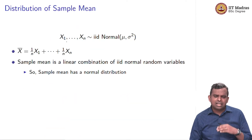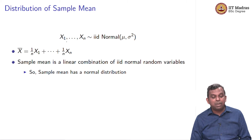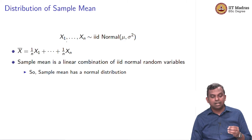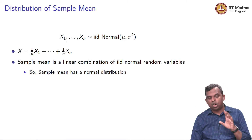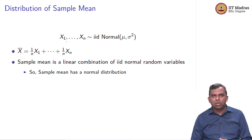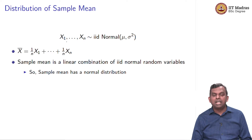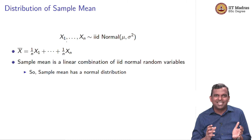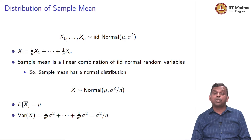First, the sample mean. The sample mean is simply a linear combination of IID normal random variables — the coefficients are just 1/n. It is (1/n)·x1 + ... + (1/n)·xn. We already know this result: a linear combination of IID normals is again a normal distribution. So the sample mean clearly has a normal distribution. What about the mean and variance of that normal distribution?